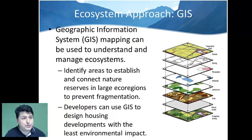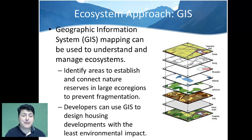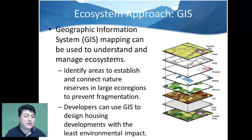Another great tool in the ecosystem approach is GIS, or the Geographic Information System. We use a series of geographic information and other data to understand and manage ecosystems. We can identify and establish ways to connect nature reserves to prevent fragmentation and encourage larger organisms, and we can use GIS to design developments that have the least environmental impact while maintaining larger areas of forest or land.